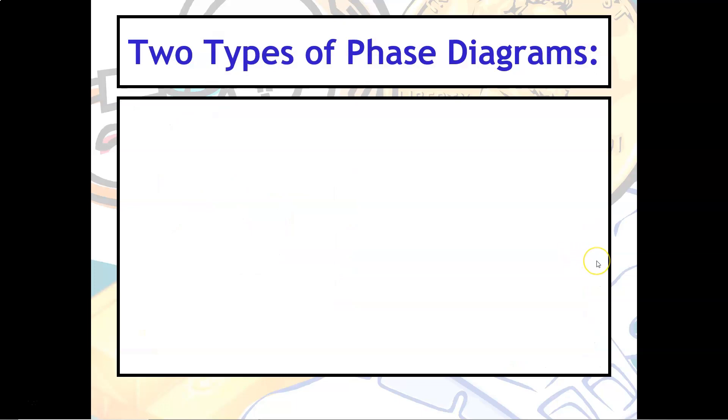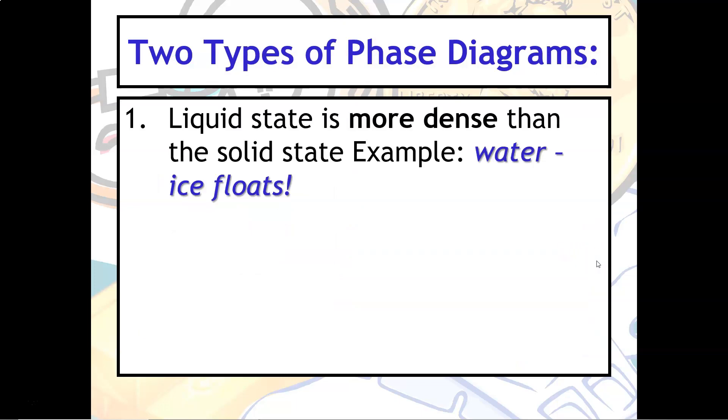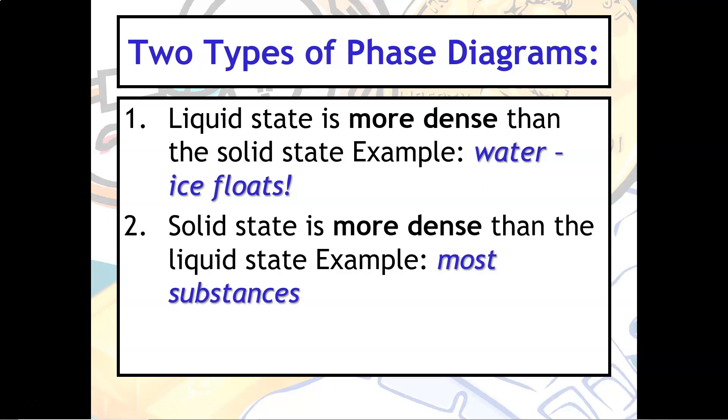There are two types of phase diagrams. The first is where the liquid state is more dense than the solid state. For example, with water, that's interesting because we know that ice floats, right? So if ice is floating, that means that we would say the liquid state is more dense than the solid state. Most substances, however, is where you expect to see the solid state be more dense. That's pretty much true for all substances.